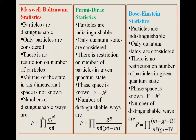So students, there are three parts. First is Maxwell-Boltzmann statistics, second is Fermi-Dirac statistics, and third is Bose-Einstein statistics. We will see them one by one.